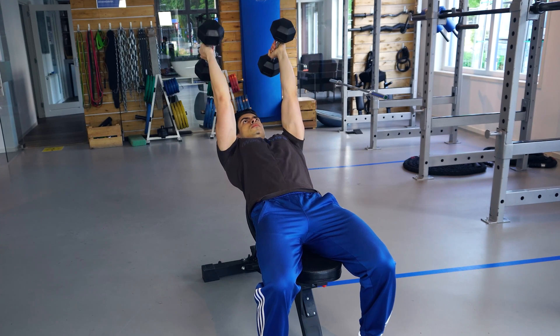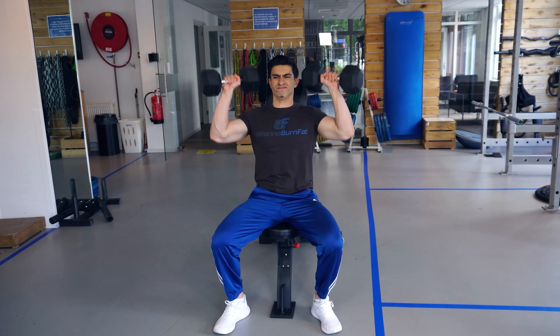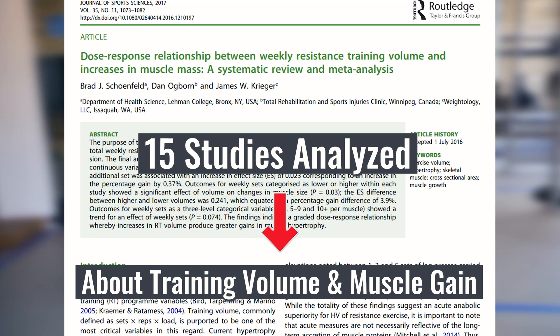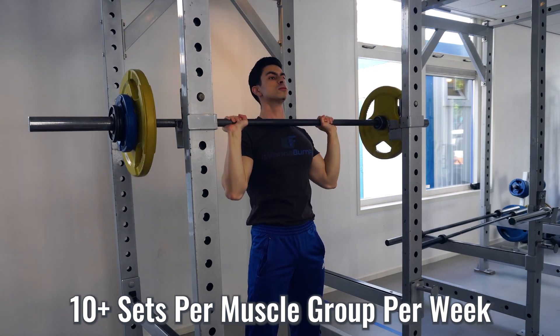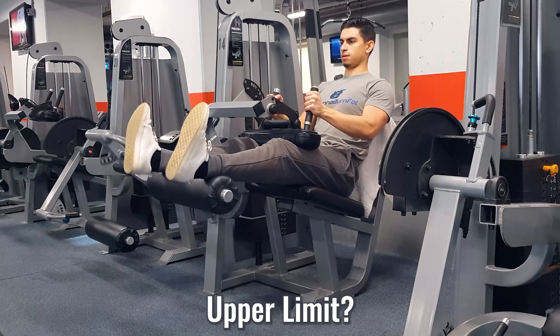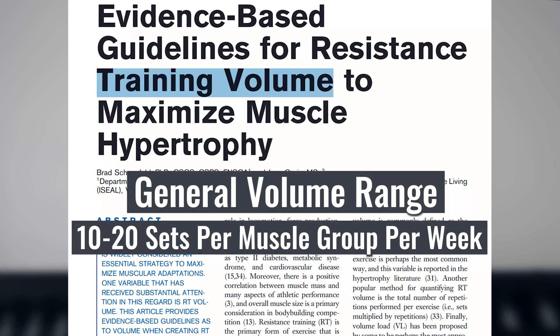Everyone's volume requirements are slightly different. For instance, we know that experienced trainees need more volume than novice lifters to make strength progress. Even though training volume is highly individual, from the scientific literature there are good general guidelines we can use as a starting point. A 2017 meta-analysis gathered data from 15 training studies to provide evidence-based recommendations on training volume and muscle growth. The researchers found linear increases in muscle growth up to 10-plus sets per muscle group per week, telling us most people should aim for at least 10 sets per muscle group per week if maximizing muscle growth is the goal. Based on another 2017 paper, for most people a nice range is 10 to 20 sets per muscle group per week.